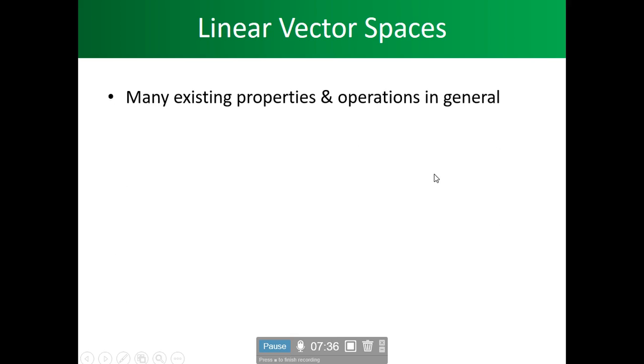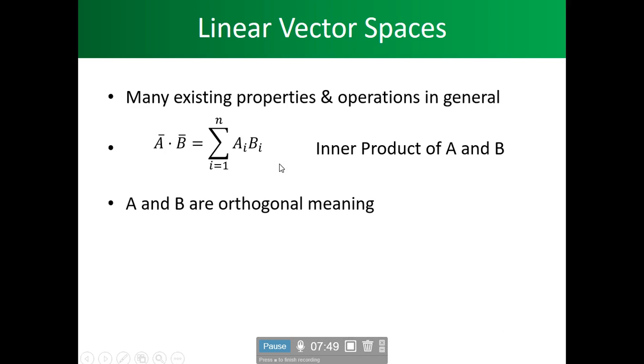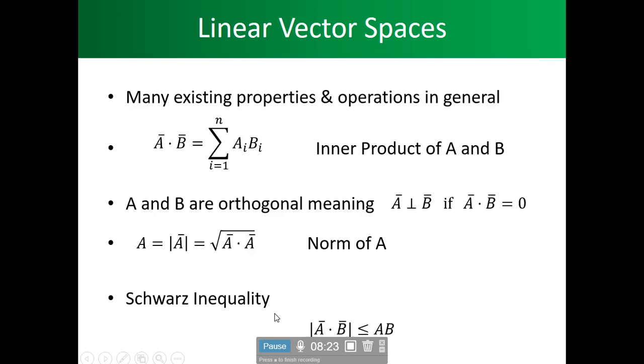Many existing properties and operations we're going to be going through. So what is the first one that we'd like to talk about? The inner product of a and b, which we represent like this, the dot product. Now what else we want to talk about? We want to also talk about a and b orthogonal, meaning that a is perpendicular to b if a dot b equals 0. Then we also would like to look at the norm. The norm of a is what? a squared, the square root of it. We'll be using that a lot today. And we're going to be using orthogonal today. We're going to be using that product today. We're going to be in equality, and that's the dot product is less than the norm of a times the norm of b.